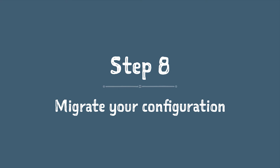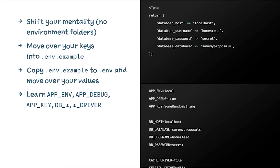Next, move your configuration. There have been significant changes but it actually simplifies everything. We no longer have `config/local`, `config/production`, etc. There's a single flat configuration structure, and anything that changes per environment is defined with environment variables. We're no longer using `.env.php` — we now use `.env`, based on the PHP dotenv library. Move your keys from `.env.php` into `.env.example`, which provides a template for what `.env` should look like. Commit that, copy `.env.example` to `.env` (which is git-ignored), and put the real values in. Note magic keys like `APP_ENV` for the environment and `APP_DEBUG` for the debug boolean.